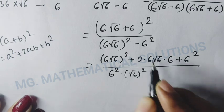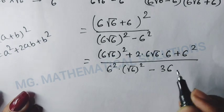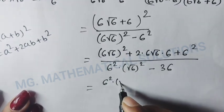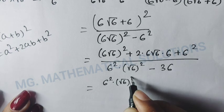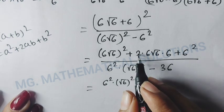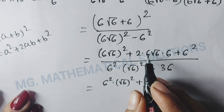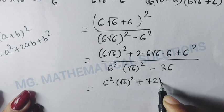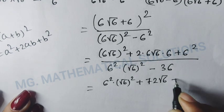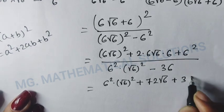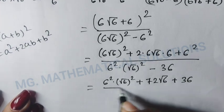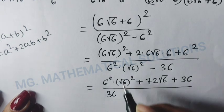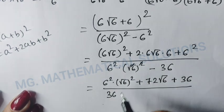So the numerator expands to 6² × (√6)² + 2 × 12 × 6 × √6 + 6², which equals 36 × 6 + 72√6 + 36. The denominator is (6√6)² - 6² = 36 × 6 - 36.